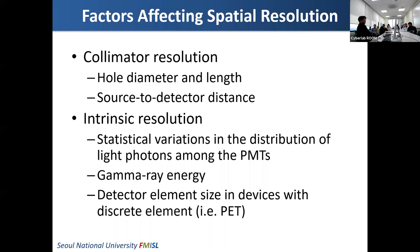Some geometric factors are also important. The photomultiplier tube has its best gain at the center, but between the photomultiplier tubes we lose a lot of light. That also causes some variation in light collection. Another factor is the gamma ray energy.